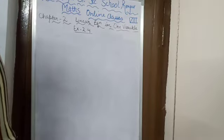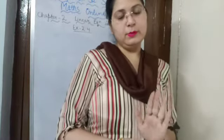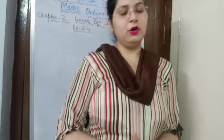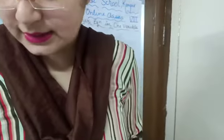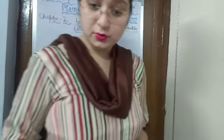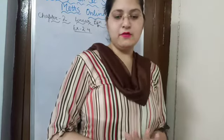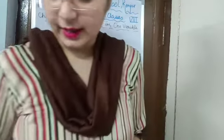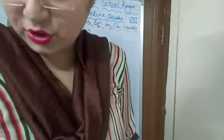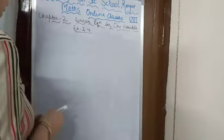He sells the material at 12% profit on shirt material and 10% profit on trouser material. His total sale is Rs. 36,600. We need to find how much trouser material he bought. So let us start — there are two types of clothes: shirt and trouser.